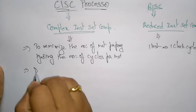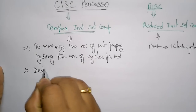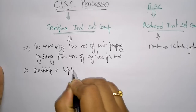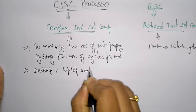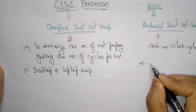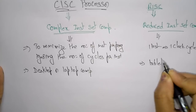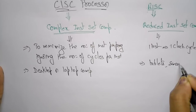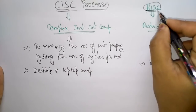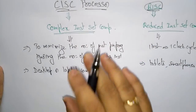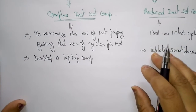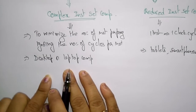The CISC processor is mostly used in desktop computers or laptop computers, whereas RISC is used in tablets and smartphones. So for mobile devices they use the RISC processor, and for desktop or laptop computers they use the CISC processor.